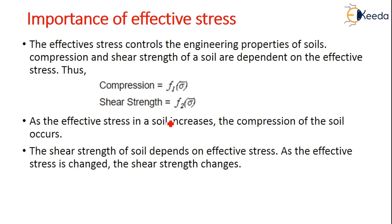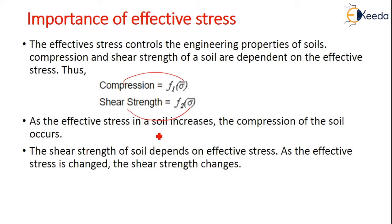The effective stress controls the engineering properties of the soil. Both the compression and the shear strength of the soil are dependent on effective stress: compression is given by F1(σ') and shear strength is given by F2(σ'). As effective stress increases, compression of the soil generally occurs. The shear strength of the soil depends primarily on effective stress, so as effective stress changes, shear strength also changes automatically.